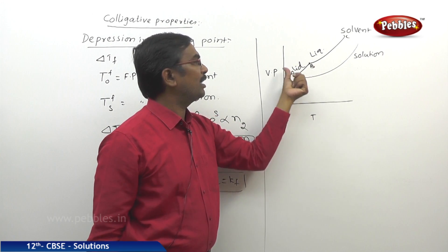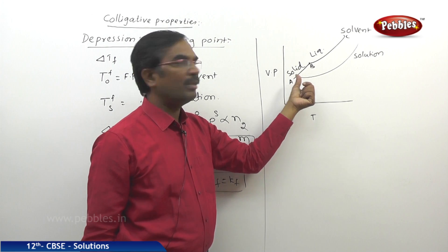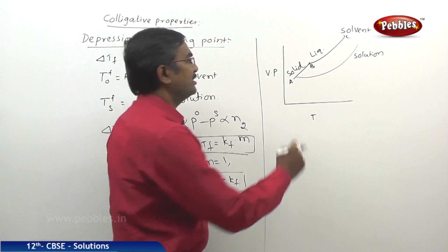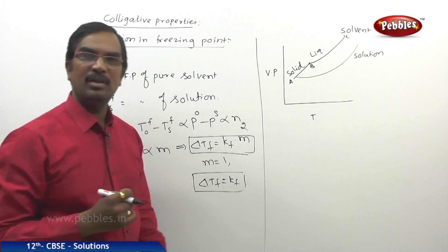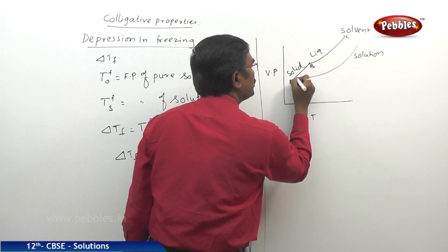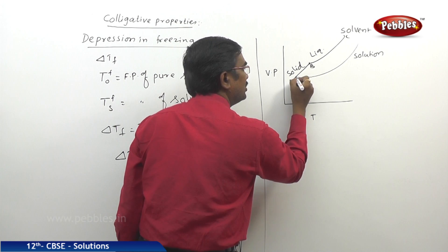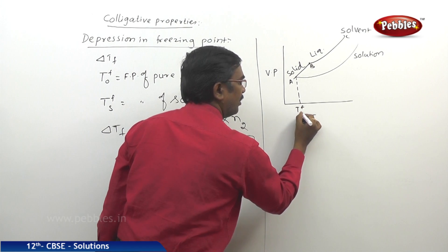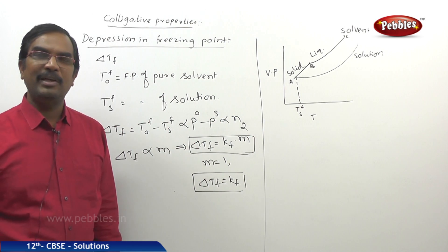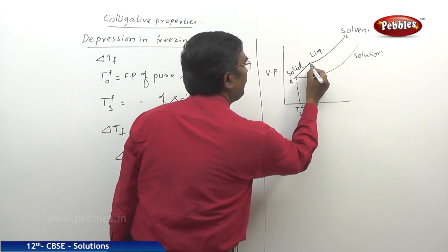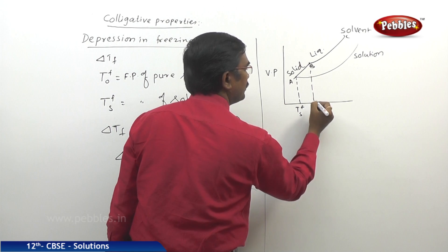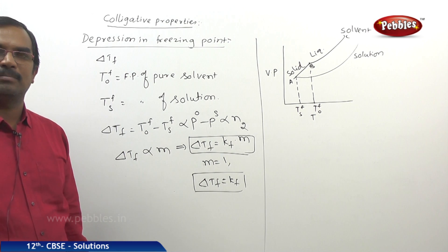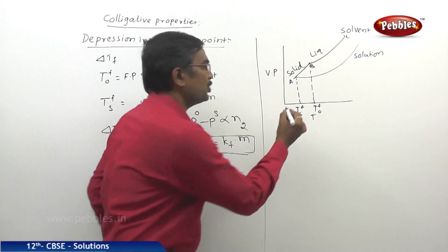From point A to B we can observe only the solid form of the solvent; from point B to point C, the liquid form of the solvent. The corresponding graph for the solution is plotted separately, where TfS represents the freezing point of the solution and Tf-naught represents the freezing point of the pure solvent.